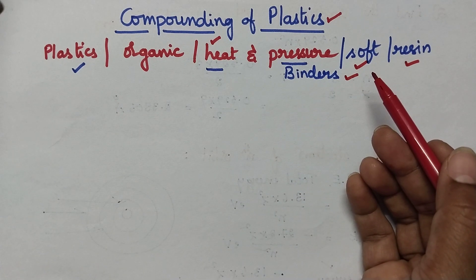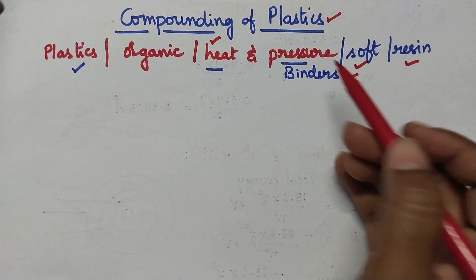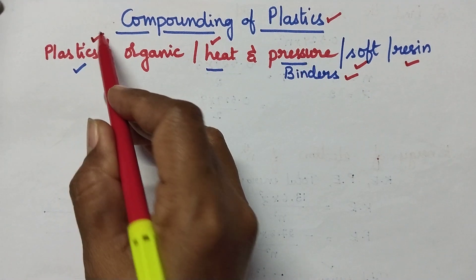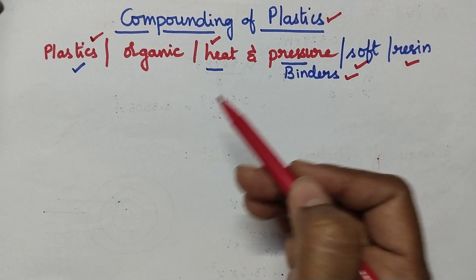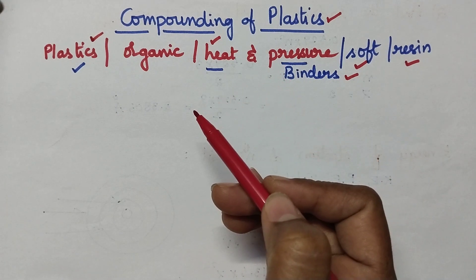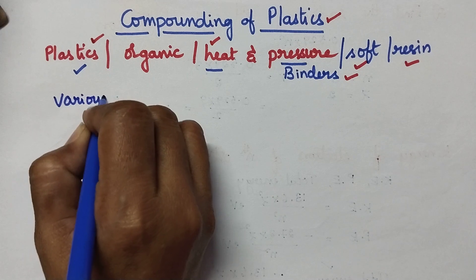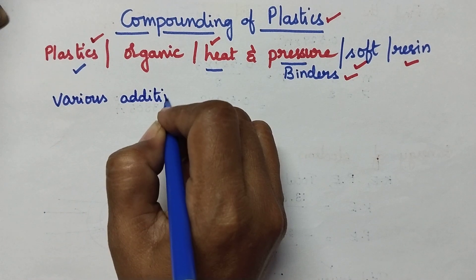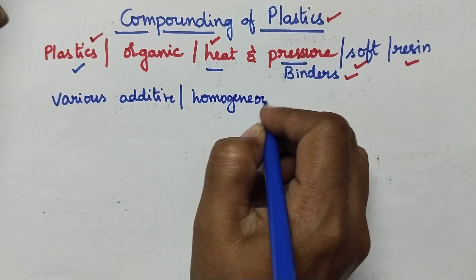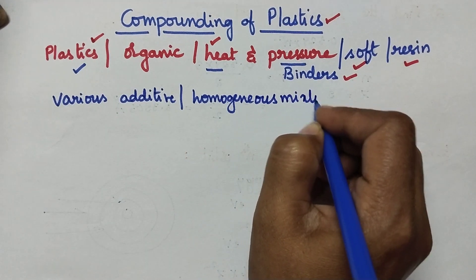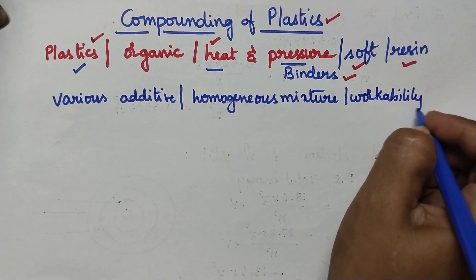Because of the soft nature, it cannot be directly used to prepare articles. So in order to improve the properties of the plastic, we need to add several additives. The process of including various additives into the plastic by mechanical means, in order to get a homogeneous mixture with improved workability, is called compounding of plastics.